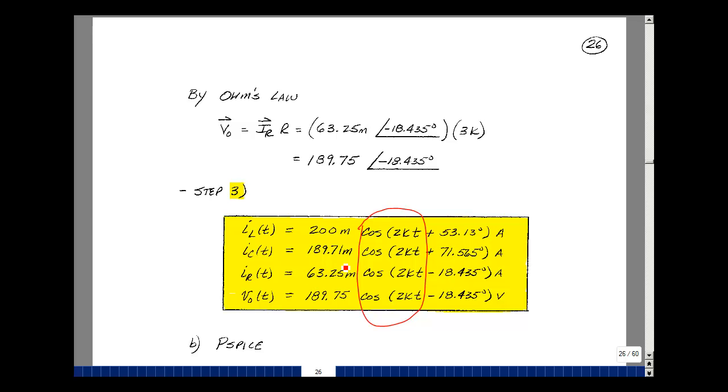For I sub R, 63.25 milli, cosine of 2000 t minus 18.435 amps. And lastly, for the voltage 189.75 cosine of 2000 t minus 18.435 degrees,